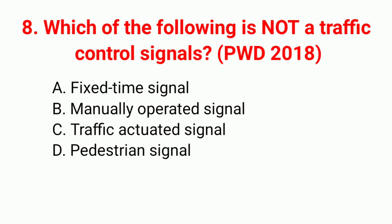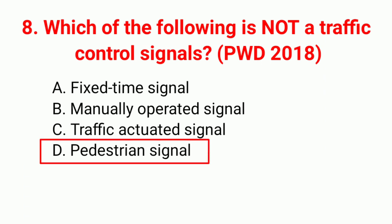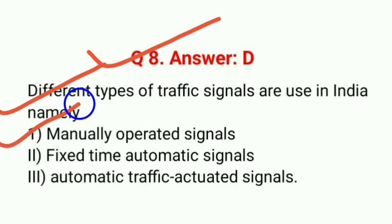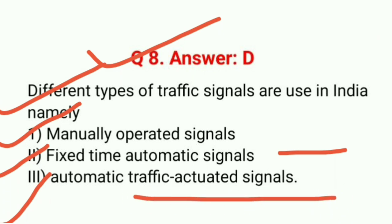Question 8: Which of the following is not a traffic control signal? Option D is correct: pedestrian signal is not a traffic control signal. Different types of traffic signals used in India are: manually operated signals, fixed type automatic signals, and automatic traffic actuated signals — three types.